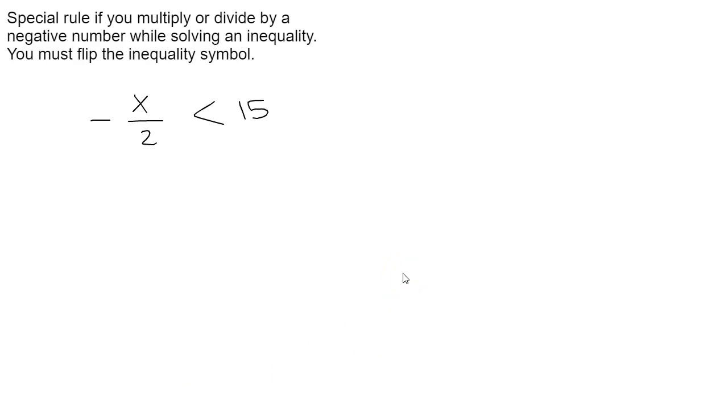So there is a special rule if you multiply or divide by a negative number while solving an inequality. The reason that we have this rule is because our positive number line and our negative are kind of in opposite directions. When you go to the left it looks like the numbers are getting bigger.